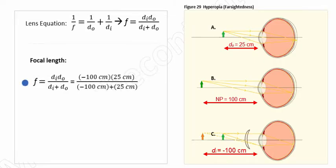Let's fill in our values, that being negative 100 centimeters for the image distance and 25 centimeters for the object distance. And upon solving, we find that a focal length of 33 centimeters is going to be required in order for our eye to clearly see an object located 25 centimeters away.